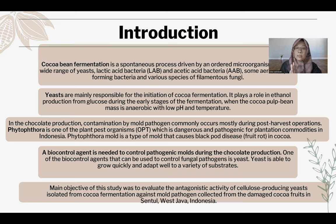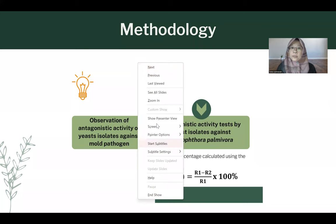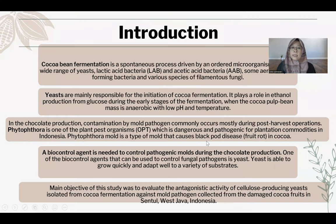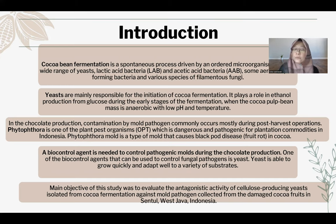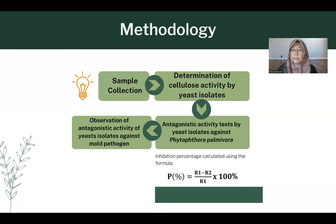As an alternative for biocontrol of mold pathogens in fermentation, we can use antagonistic microbes — for example, yeast. Yeast can be good in biocontrol production, such as Rhodotorula or Myconoviella. The main aim of this study is to evaluate the antagonistic activity of cellulase-producing yeast isolated from cocoa fermentation against pathogenic fungi collected from cocoa fruit in Central West Java. The methodology covers sample collection, determination, cellulase activity, antagonistic activity, and observation of antagonistic activity against mold pathogens.